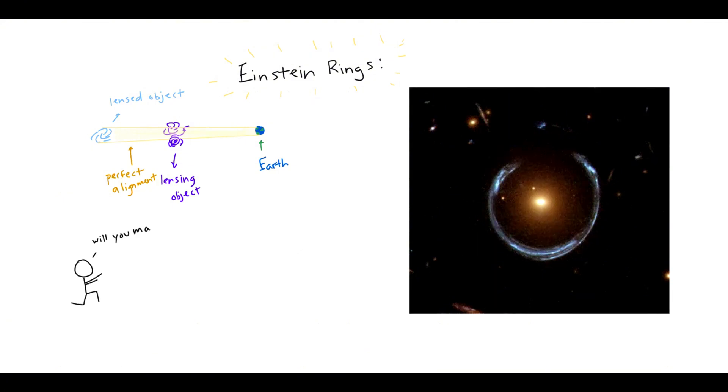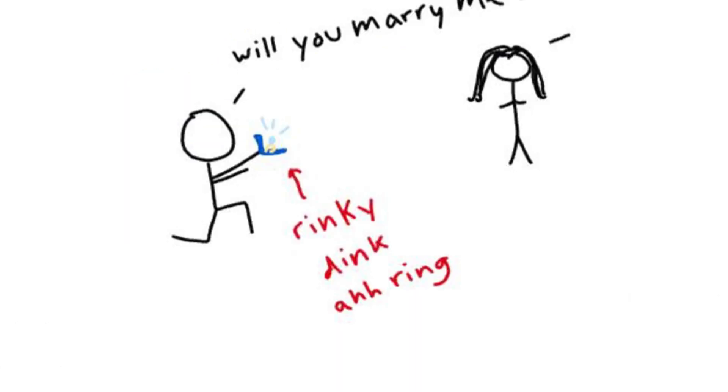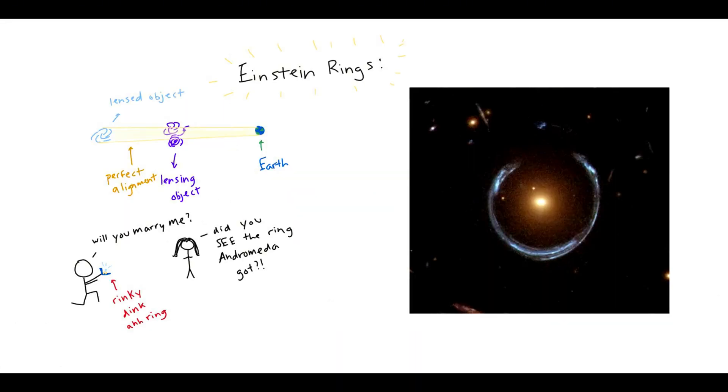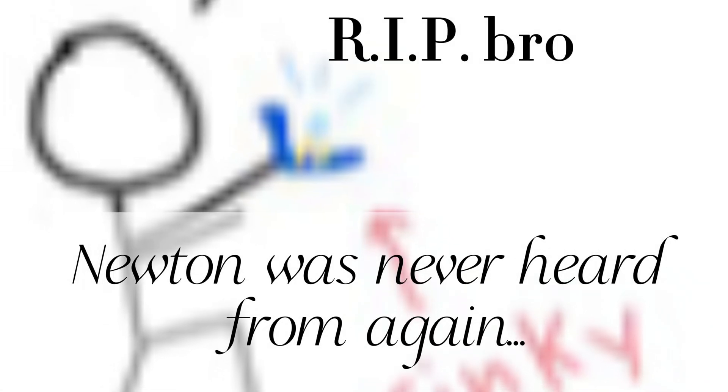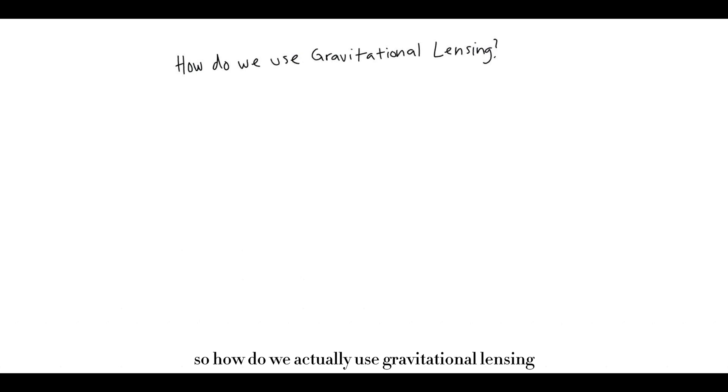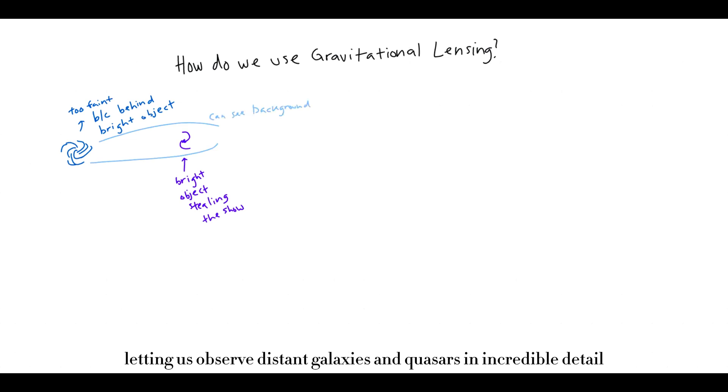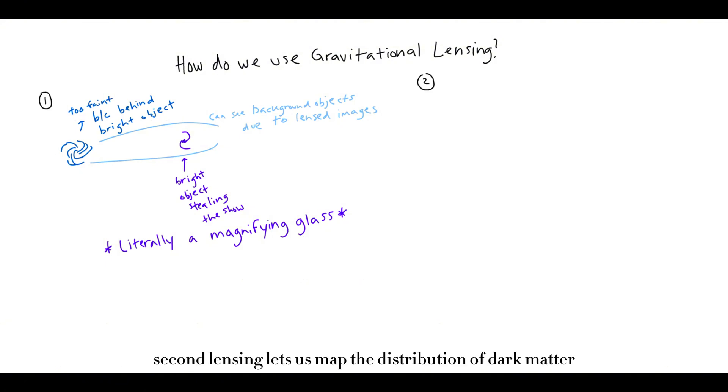So how do we actually use gravitational lensing? First of all, it helps us study objects that are otherwise too faint or too far away. The lensing effect magnifies light, letting us observe distant galaxies and quasars in incredible detail. It's like having a cosmic telescope built into the universe.